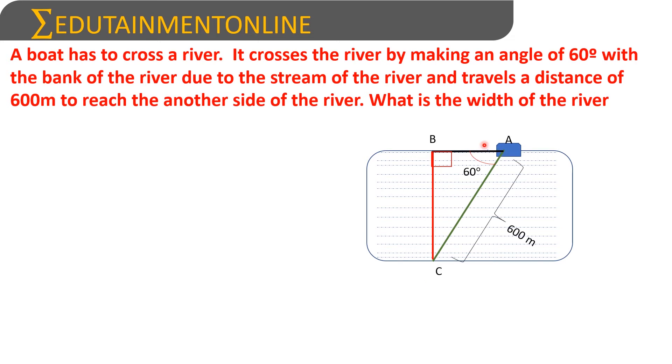Let us name the triangle as ABC, so we have to find BC. With respect to this angle, BC is the opposite side and AC is the hypotenuse.